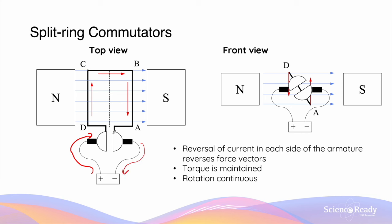But because the contact point between the two commutators and the two brushes is now switched around, the current will now travel from D to C and from B to A — which is the opposite to what we had before the contact point was switched. This is exactly what we wanted.